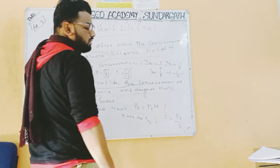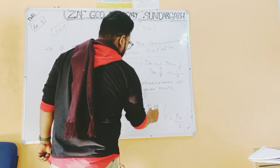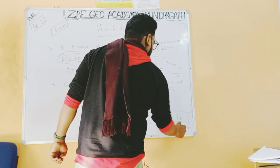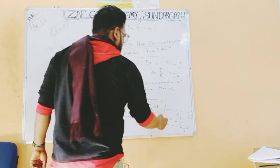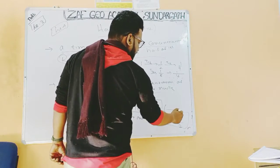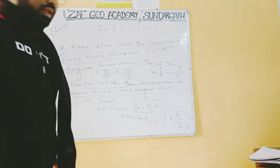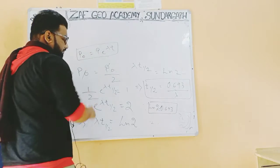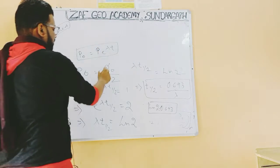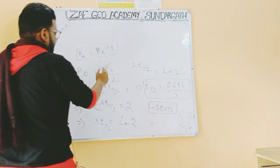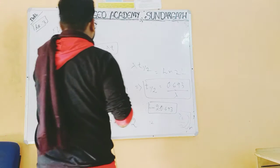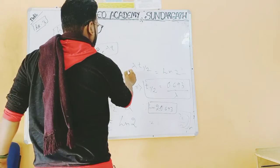From the previous lecture we derived the equation P₀ = Pe^(λt). Now, after one half life, P will be equal to P₀/2, because after one half life the concentration reduces to half. We substitute P = P₀/2 into the equation, giving P₀ = (P₀/2) · e^(λ·t½).